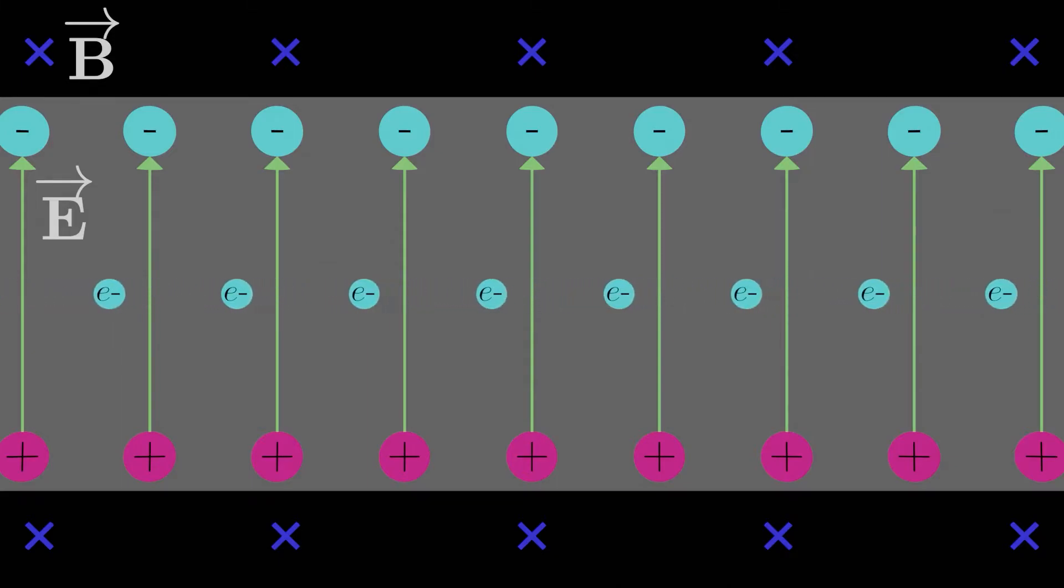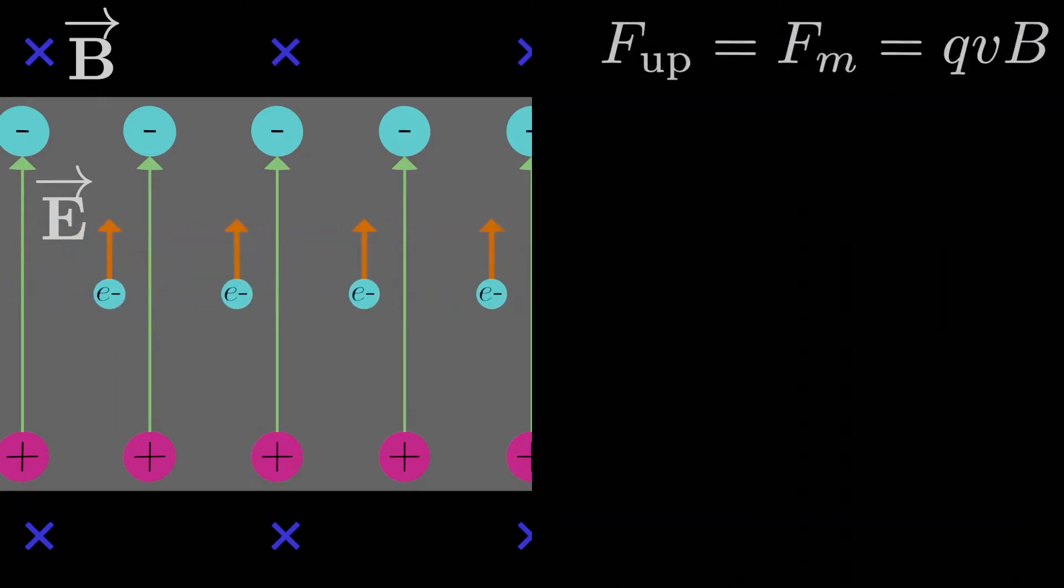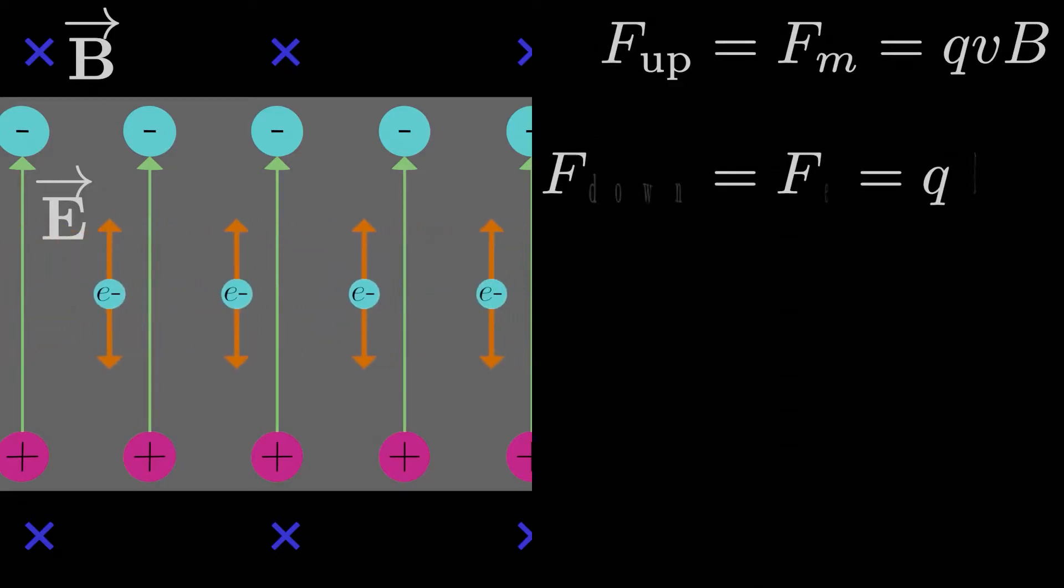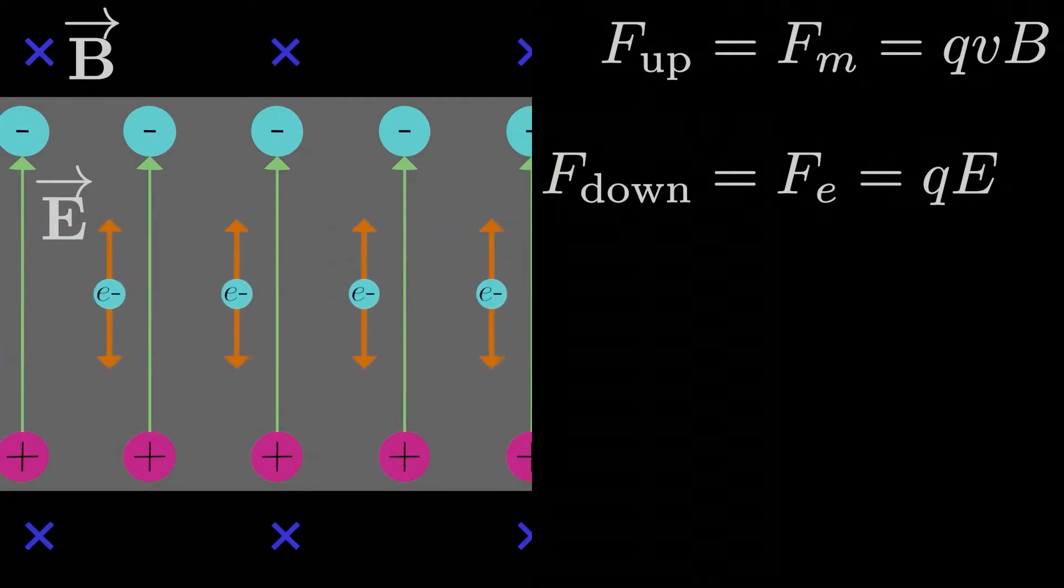If that's the case, then the upwards magnetic force, which is Qvb in magnitude here, since the velocity is perpendicular to the magnetic field, that magnetic force is perfectly balanced by the electric force, which is opposite the electric field that the electrons create internally. The internal electric field would generate an electric force in the upwards direction for a positive charge, so a downwards direction for these negatively charged electrons.